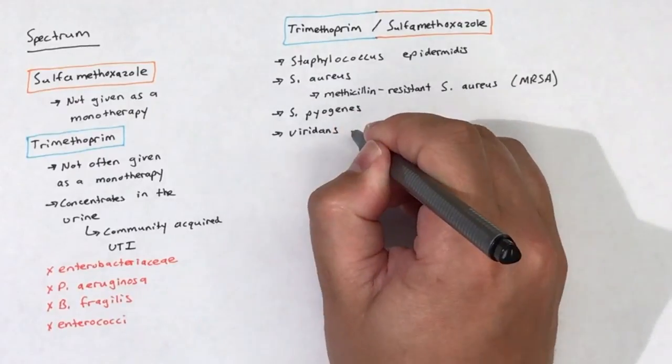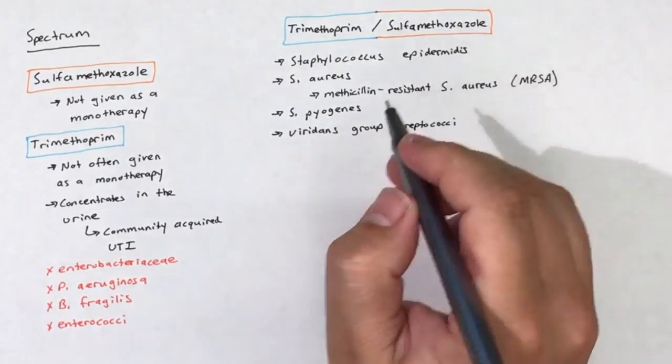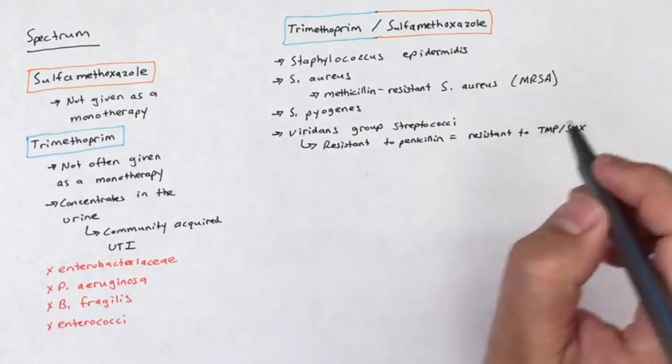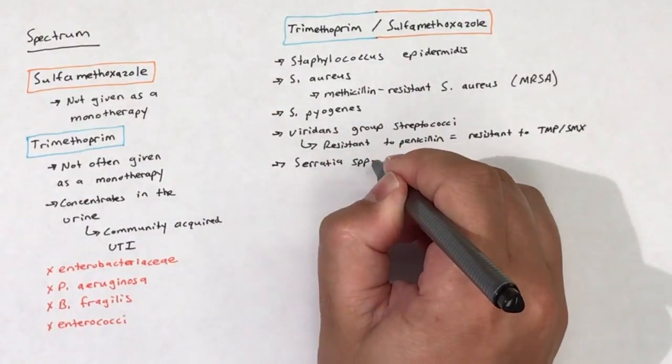TMP-SMX is active against S. pyogenes and viridans group streptococci. Streptococci that are resistant to penicillin are usually also resistant to TMP-SMX.